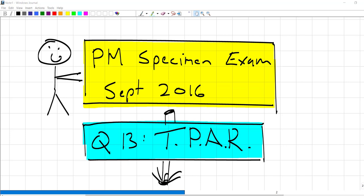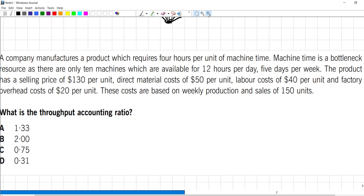This is on the throughput accounting ratio. Quite a tricky question. You guys have a look at this question, give it a try, then we'll do it together.